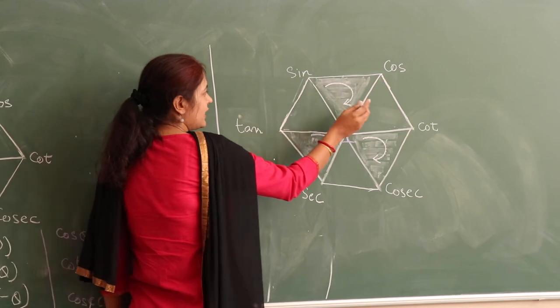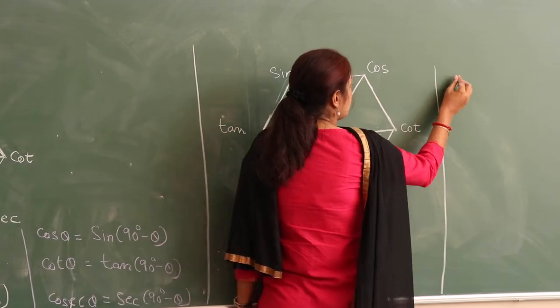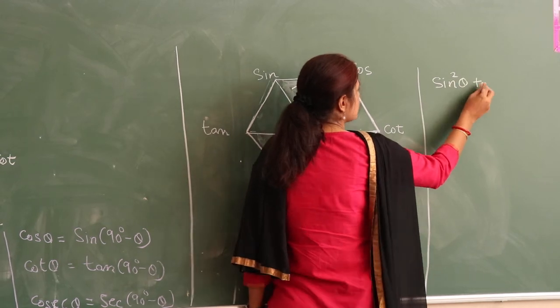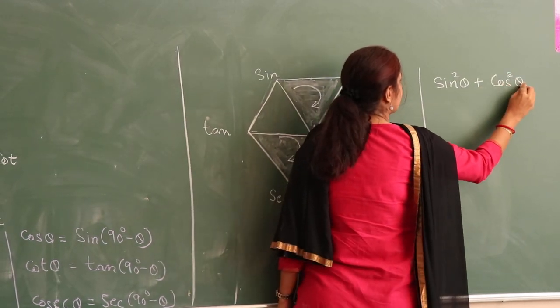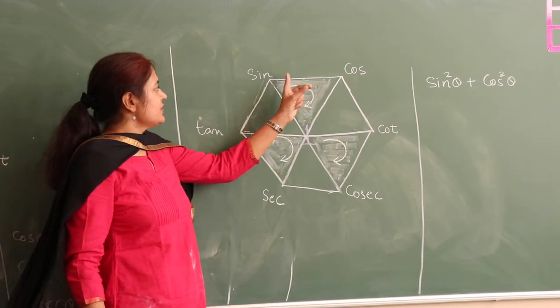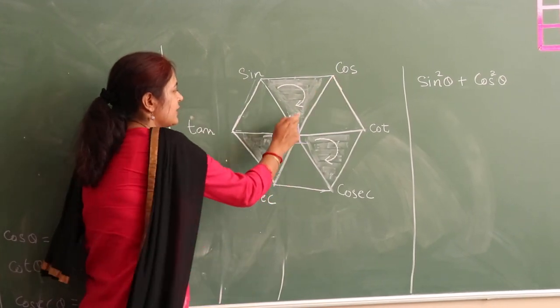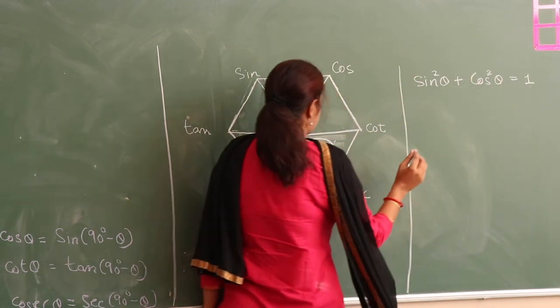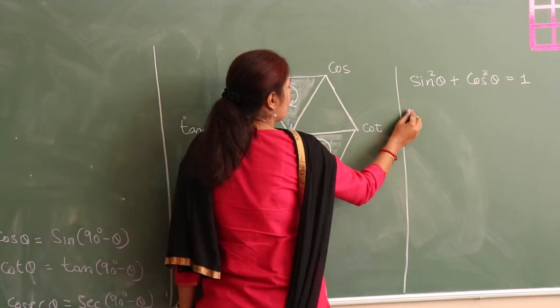So when I take this triangle, I get sin square theta plus cos square theta equals one. So sin square theta plus cos square theta is equal to one.